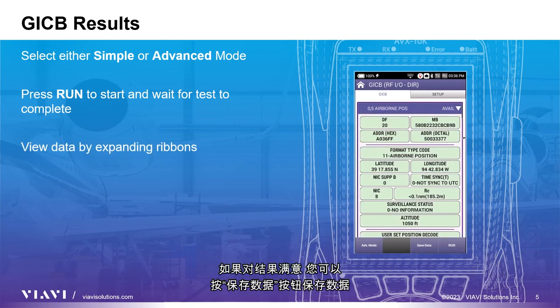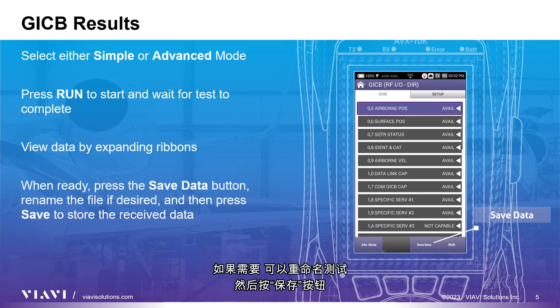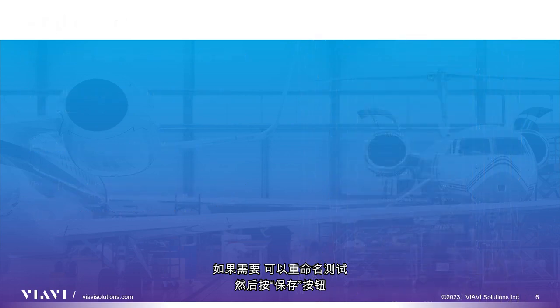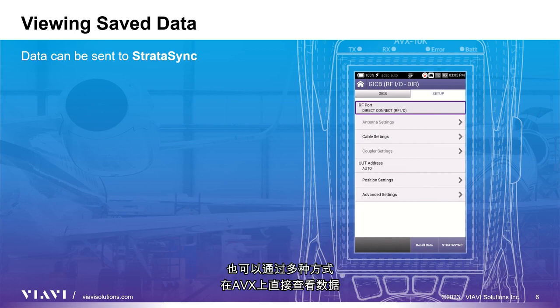When satisfied with the results, you can save the data by pressing the Save Data button, renaming the test if desired, and then press the Save button. Any files that have been saved can be sent to your Stratasync account. Please review the video on Stratasync for more details.